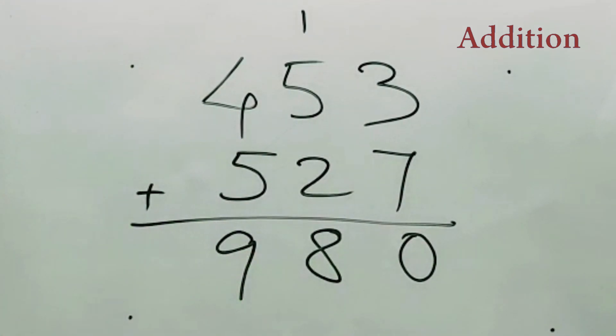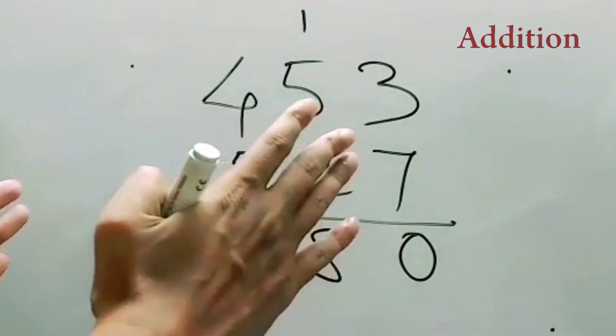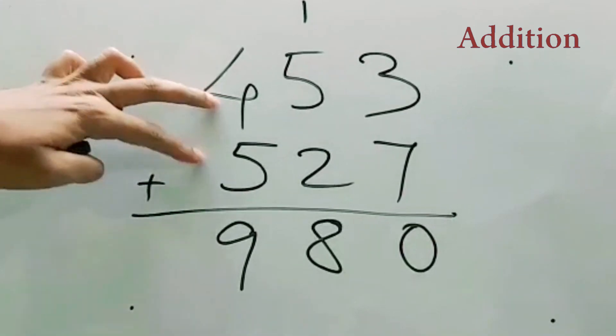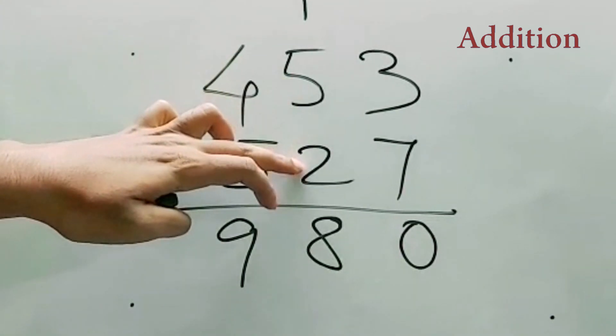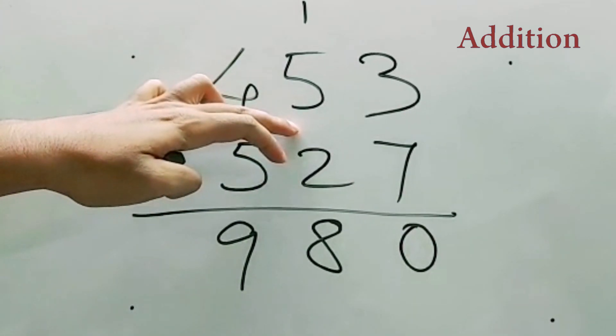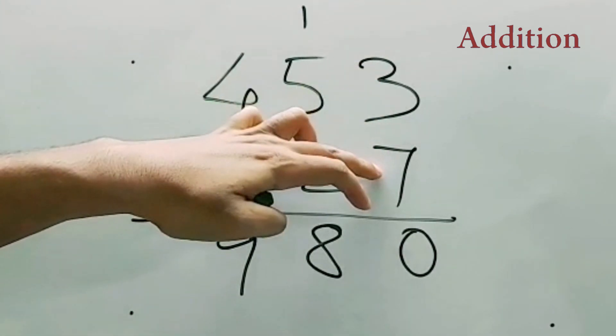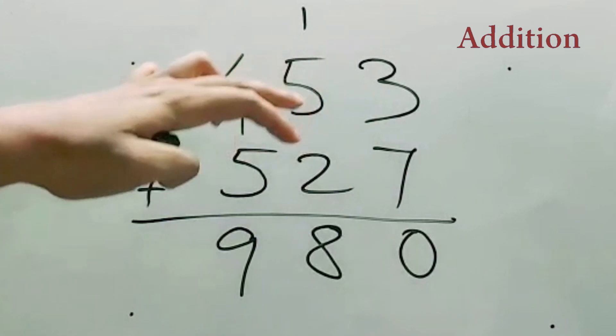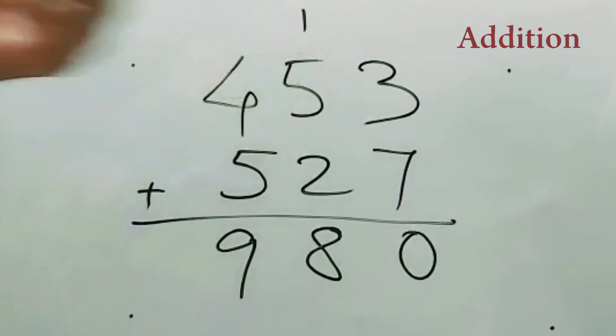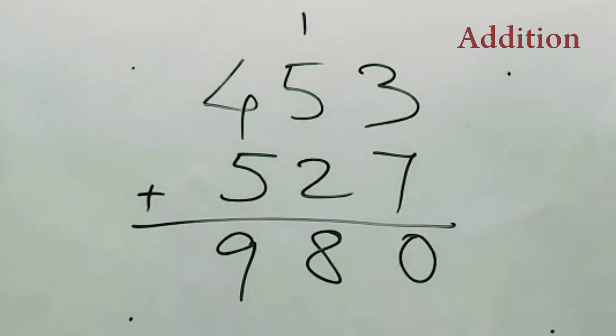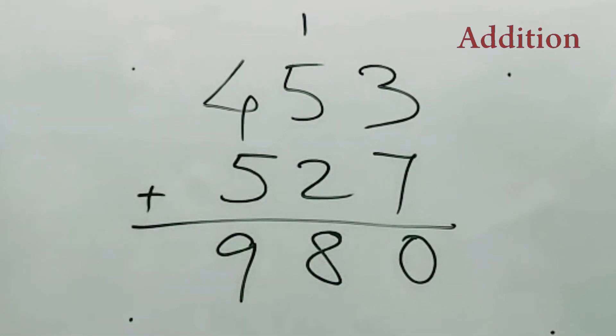But what I'm going to say is we have to go reverse. So how? This 4 plus 5 is 9, that means 900, then 5 plus 2 is 7, that means 70. And 7 plus 3 is 10. So 70 plus 10 is 80. So 980, simple way. You don't have to write it anywhere. You just calculate mentally.